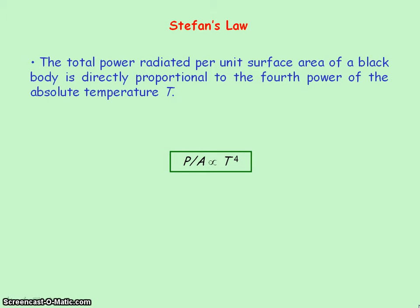Stefan's law states that the total power radiated per unit surface area of the black body is directly proportional to the fourth power of the absolute temperature. And the total power radiated by a star is called luminosity, given the symbol L. So the luminosity of a star is directly proportional to its surface area and also directly proportional to the fourth power of its absolute temperature.